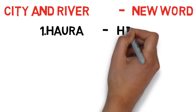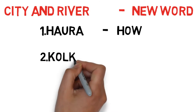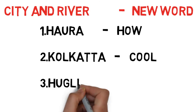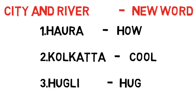First one: Howrah — it is a city. Second one: Kolkata — it is a city. Third one: Hooghly — it is a river. But how to remember these three important names? See friends, first one — Howrah. If you observe the first three letters H-A-U, they stand for 'how'. So try to remember Howrah as 'how'.